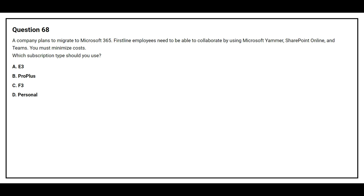Question number 68. A company plans to migrate to Microsoft 365. Firstline employees need to be able to collaborate using Microsoft Yammer, SharePoint Online, and Teams. You must minimize cost. Which subscription type should you use? Option A: E3. Option B: Pro Plus. Option C: F3. Option D: Personal. The correct answer is Option C, F3.